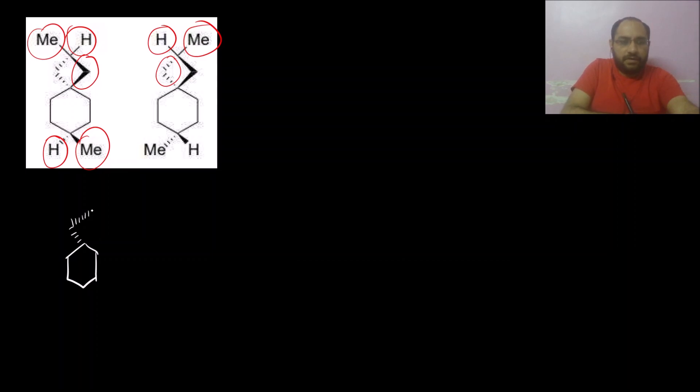Fused at one particular carbon, such compounds are called spiro compounds. Then there is methyl and hydrogen - here below the plane there is hydrogen and above the plane there is methyl.